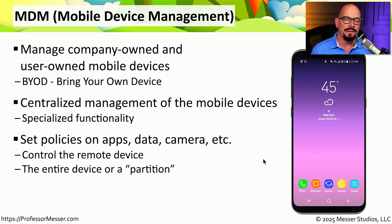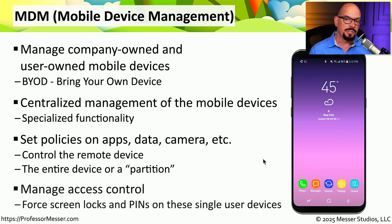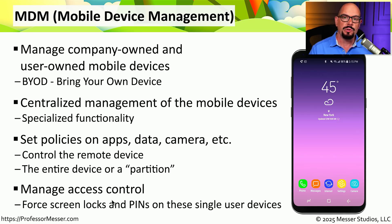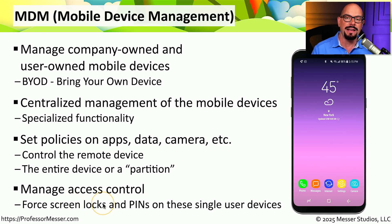This allows your users to have their own private data that is protected and private to them, and have a different part of the phone that is partitioned off just for corporate data. From a security perspective, you can require the use of certain security policies. For example, you may require everyone in your organization to use screen locks, and those screen locks need to have a personal identification number or other type of access in order to unlock that phone.